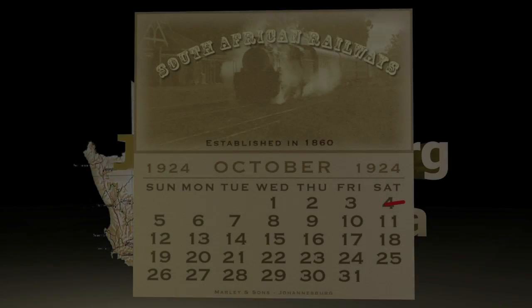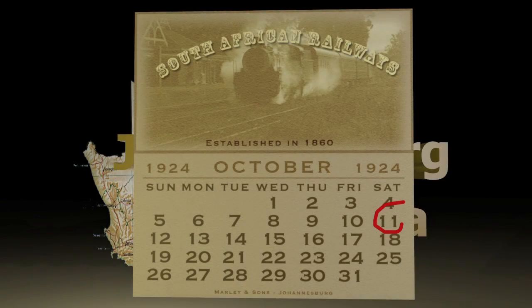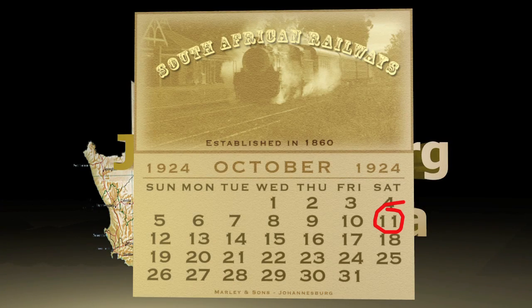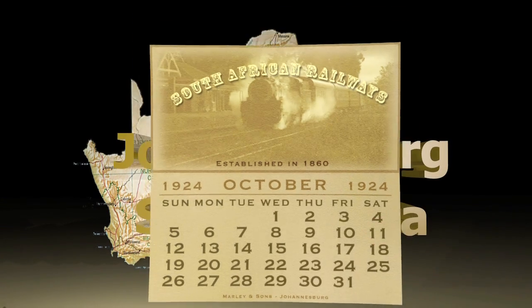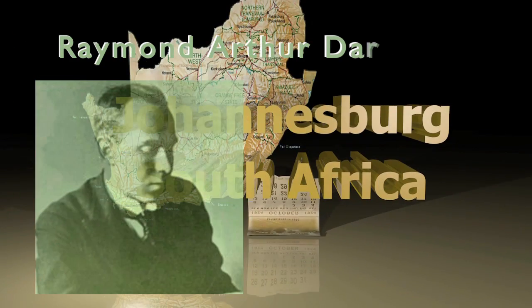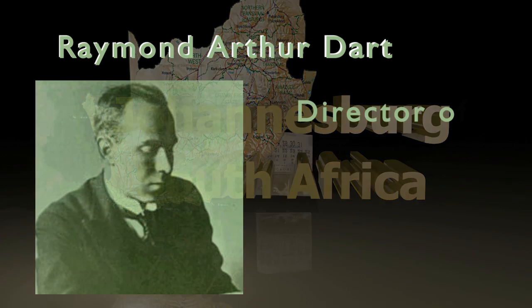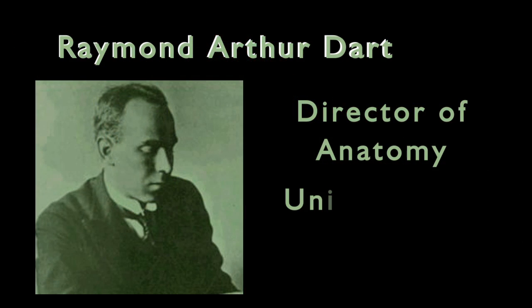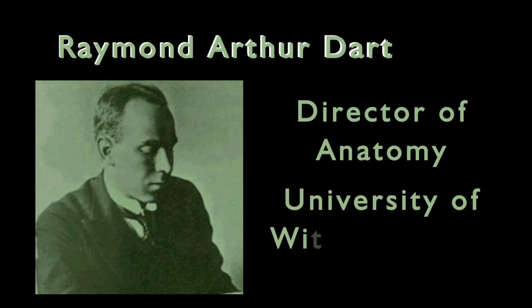It is October 11, 1924, a Saturday in Melrose, an upper-class area of Johannesburg, South Africa. Raymond Arthur Dart, the young director of anatomy at the University of Witwatersrand, is getting dressed for a wedding. He is the best man.